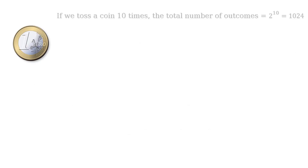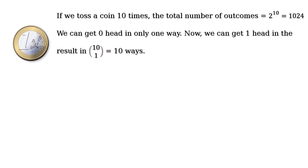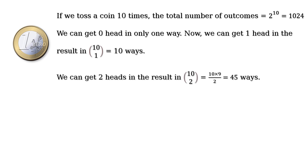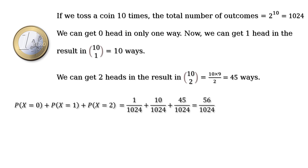If we toss a coin 10 times the total number of possible outcomes is 2 to the power 10, which equals 1024. We can get 0 heads in only one way, 1 head in 10C1 = 10 ways, and 2 heads in 10C2 = 45 ways. So P(X=0) + P(X=1) + P(X=2) = 1/1024 + 10/1024 + 45/1024.